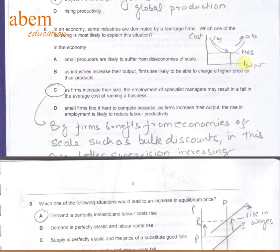Economies of scale: I've given you the diagram over here. Output, cost, and we can say economies of scale, diseconomies of scale, minimum efficient point. Big firms benefit from economies of scale such as bulk discounts. In this case, the specialist measures can provide better supervision, so you're talking about increasing productivity. The answer is C.